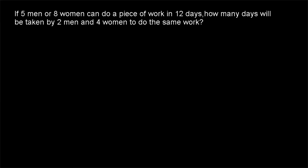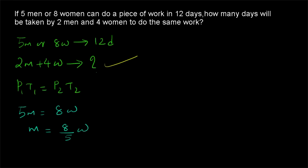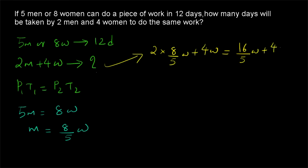Example 3: If 5 men or 8 women can do a piece of work in 12 days, how many days will 2 men and 4 women take to do the same work? From 5 men = 8 women, we get 1 man = 8/5 women. So 2 men + 4 women = 2 × (8/5) women + 4 women = 16/5 + 4 = 36/5 women.